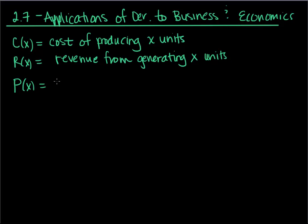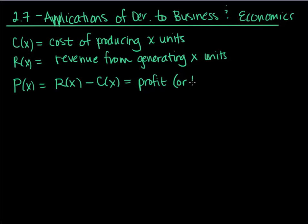We define the profit function as revenue — how much money I bring in from selling my t-shirts — minus the amount of money I put in to actually make the t-shirts, because no one's going to make them for free. This could be a profit or a loss. I get a loss when my costs outweigh my revenue. So this is the profit or loss generated by producing and selling X units.